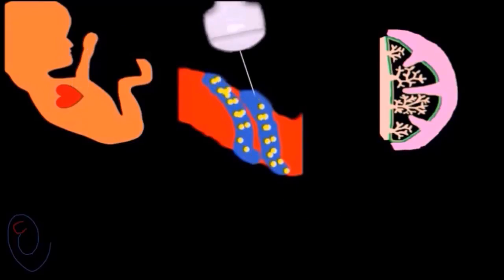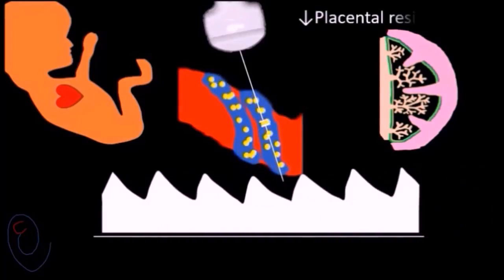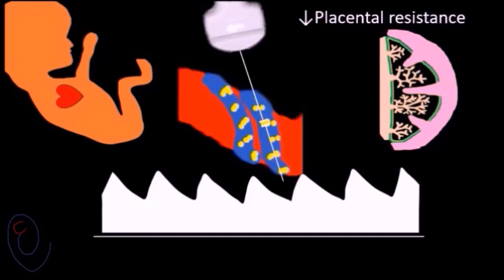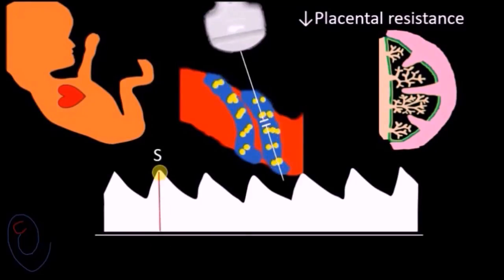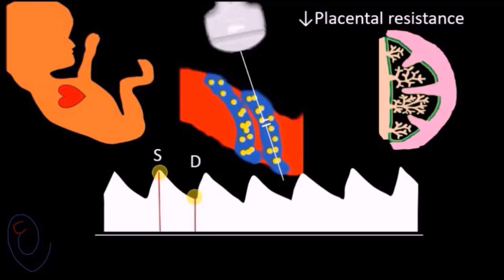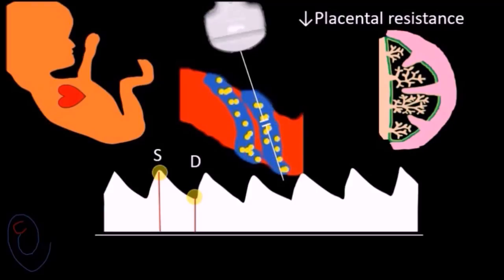A Doppler study will examine these velocities and represent them graphically on the ultrasound monitor. In normal pregnancy, the healthy placenta has a low vascular resistance. On the graph, the highest point on the cardiac cycle is the peak systolic velocity, referred to by the letter S, and the last point on the cardiac cycle is the end diastolic velocity, referred to by the letter D.